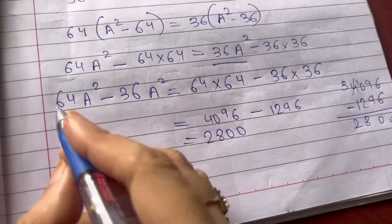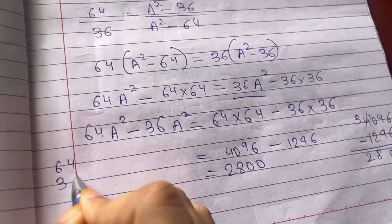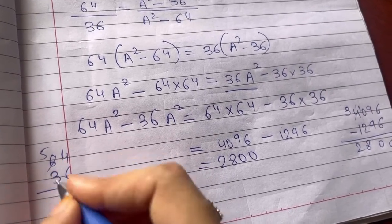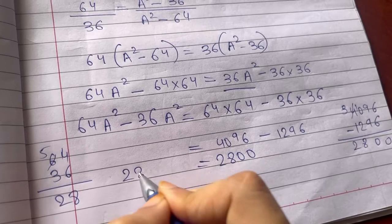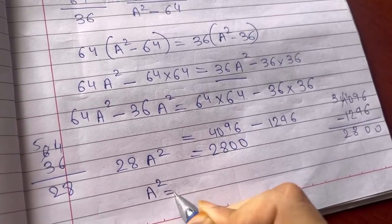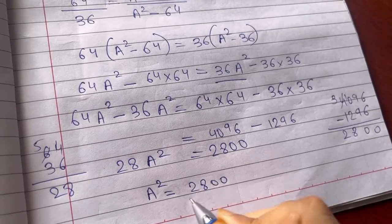0, 0, 0. Borrow 10 minus 2 is 8. 2, so it is 2800. Here 64 minus 36. Borrow 14 minus 6 is 8, 5 minus 3 is 2. So 28 A square. A square, so I will write it as A square equals 2800 upon 28.